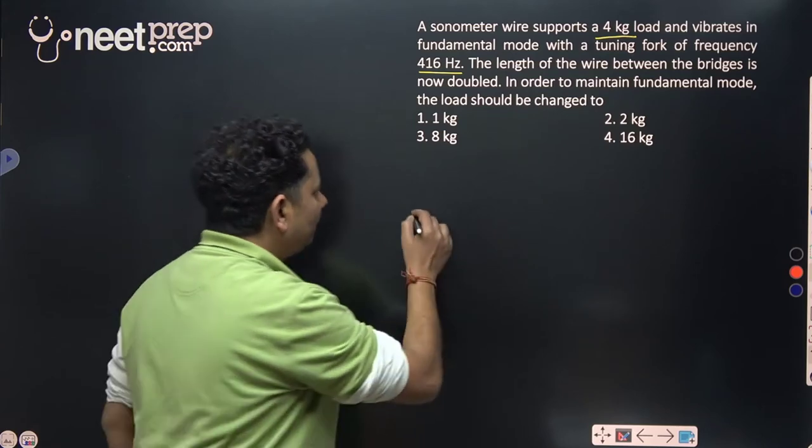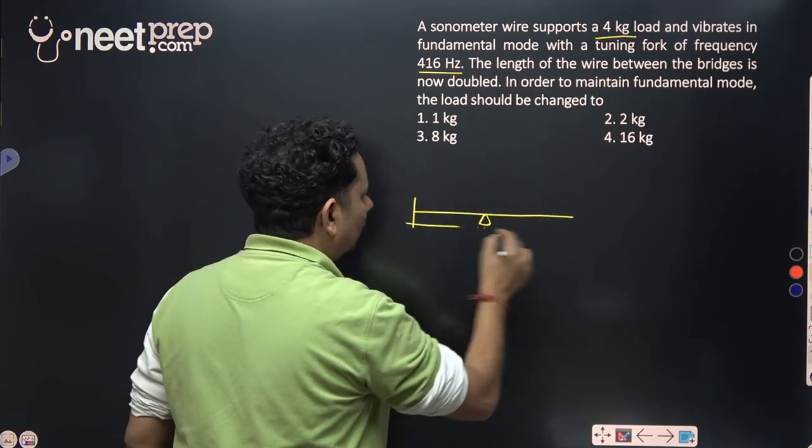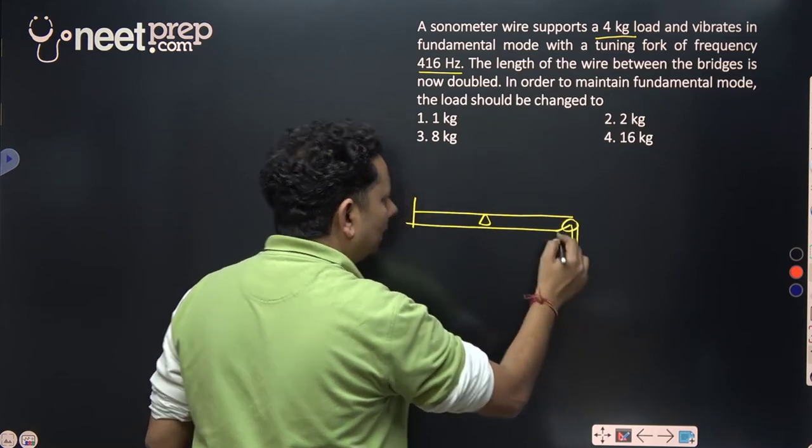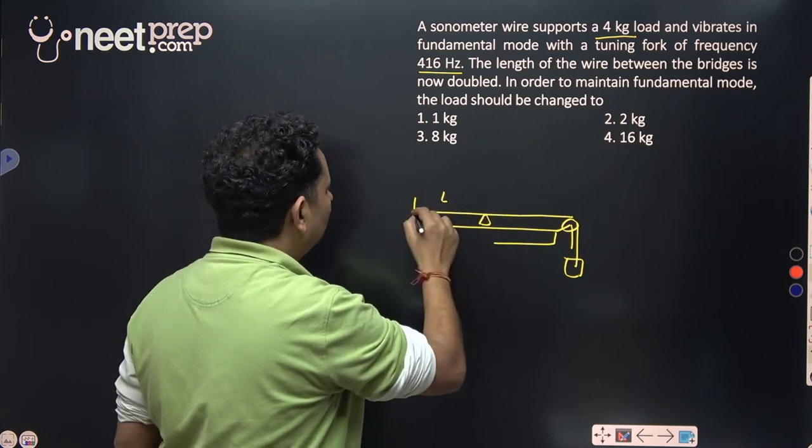This is the scenario. Here we have a sonometer wire, here we have a tuning fork, here we have a load, and here we have the table. Now here we have fundamental mode.